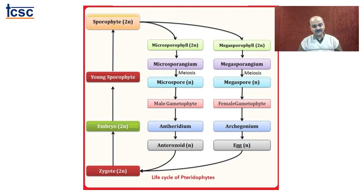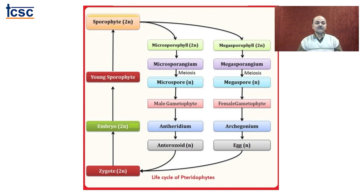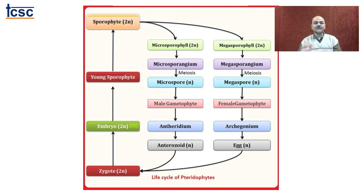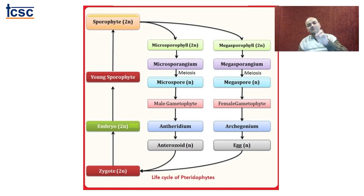The antheridium produces antherozoids and the archegonium produces the egg cell. A common characteristic feature connecting pteridophytes with bryophyta is that they require water for fertilization. The antherozoids move with the swirling movement of flagella and locate the archegonium through a process called chemotaxis. Malic acid is released around the mature archegonium, which is sensed by the antherozoids. Only one antherozoid successfully enters the mature archegonium containing the mature egg cell, fertilizes it, and produces a zygote which is diploid in nature.